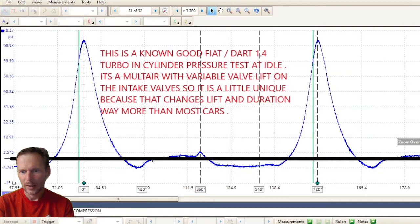Alright, so we're looking at it and this is a black line I created on the waveform here. It's going to be a representation of zero PSI. So anything below the black line is vacuum, anything above it is pressure.